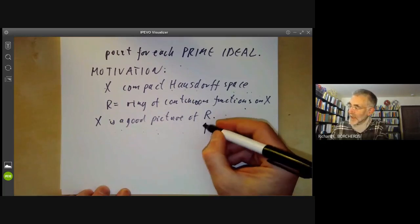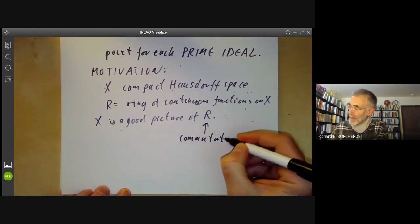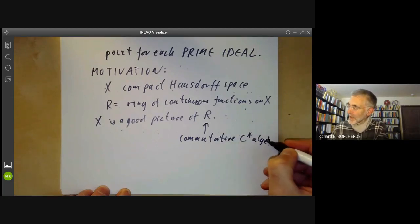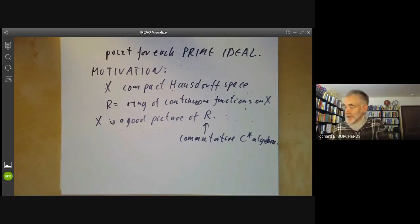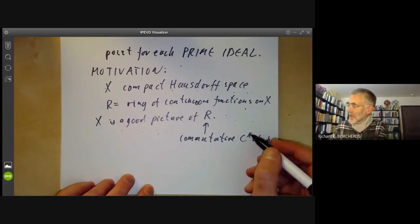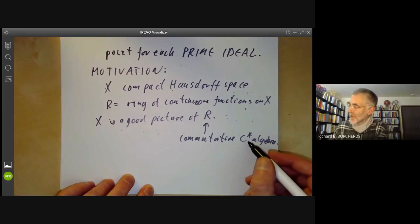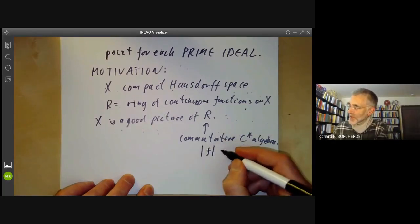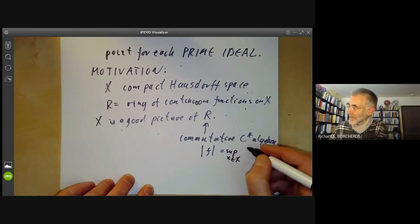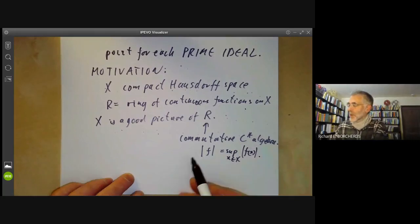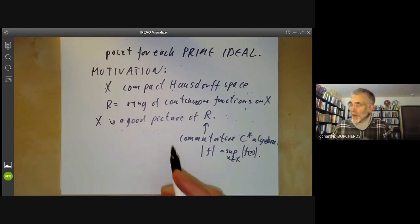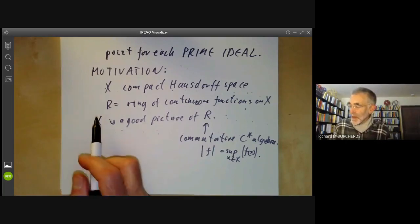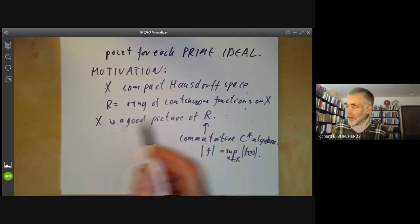The ring R in this case is something called a commutative C* algebra. The theory of C* algebras was developed sometime before Grothendieck invented schemes and was probably rather influential on the definition of a scheme, although the early history is a little bit unclear. A C* algebra basically means it's an algebra over the real numbers with a norm, where the norm of a function is the supremum over all X in the space of the absolute value of F(X). The point is that the space X can be recovered from the ring R.